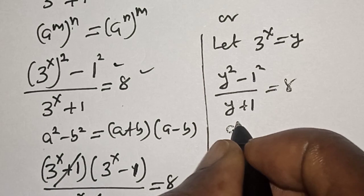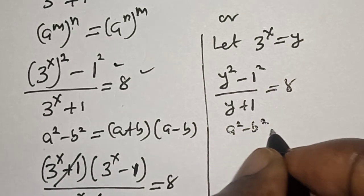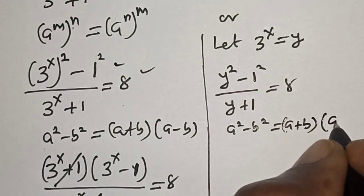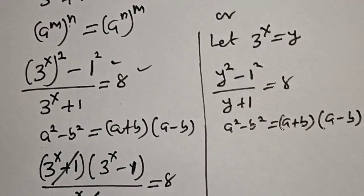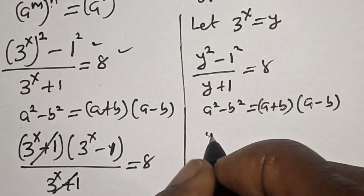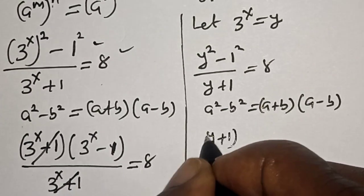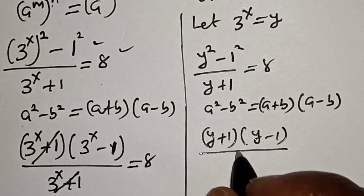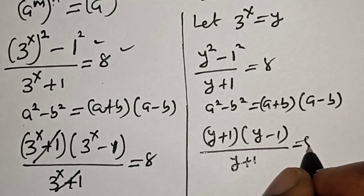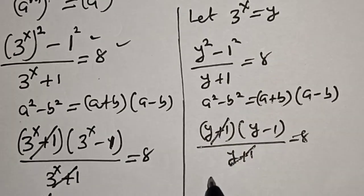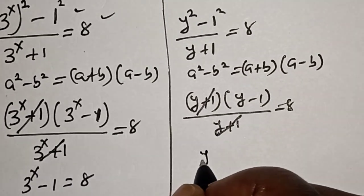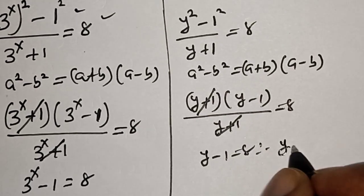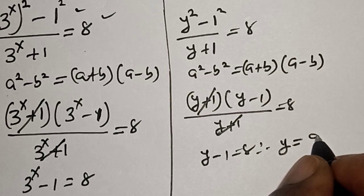Then, applying the rule a squared minus b squared equals (a plus b)(a minus b), we have (y plus 1)(y minus 1) divided by (y plus 1) is equal to 8. This (y plus 1) will cancel this. We have y minus 1 is equal to 8. Therefore, y is equal to 9.